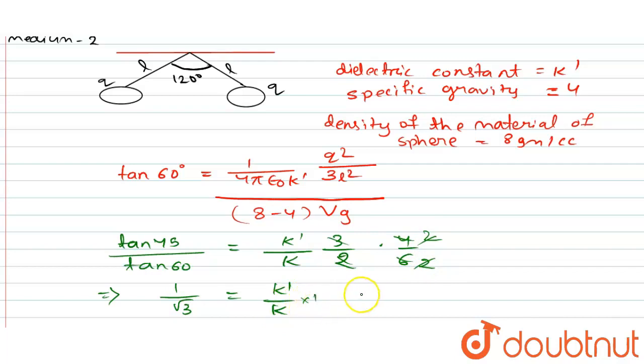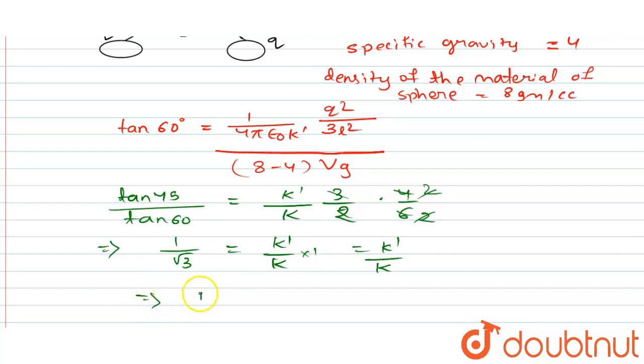Into 1, that is K'/K. From this we can calculate K', that is 1/√3 × K, that is K/√3. So the dielectric constant for the second medium will be K/√3. This is our answer. Thank you.